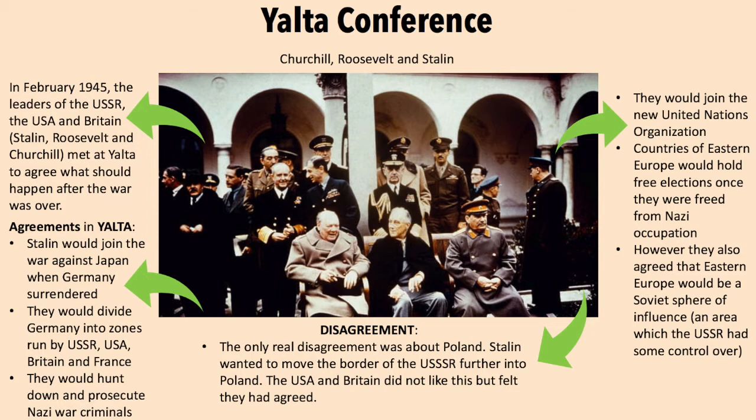However, they also agreed that Eastern Europe should be a Soviet sphere of influence, which is an area where the USSR had some control. The only real disagreement was about Poland — Stalin wanted to move the border of the USSR further into Poland, and the USA and Britain did not like this but felt that they had agreed.